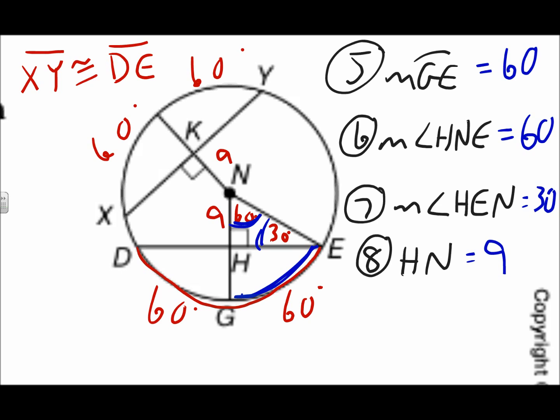Remember: when a radius is perpendicular to a chord, it bisects both the chord and the arc. There's a lot of good symmetry there.